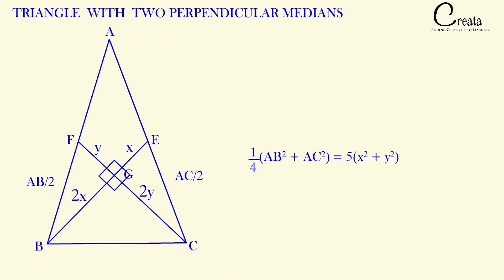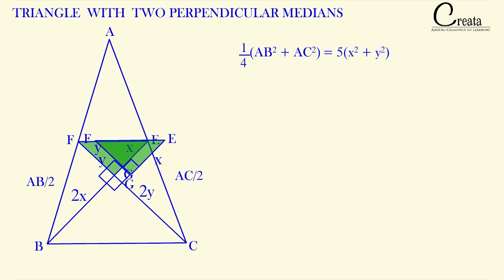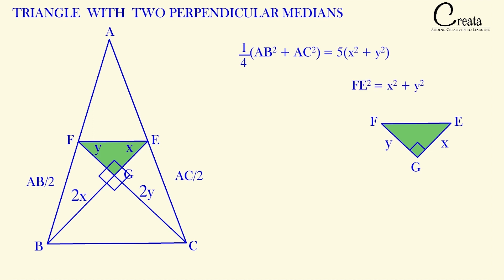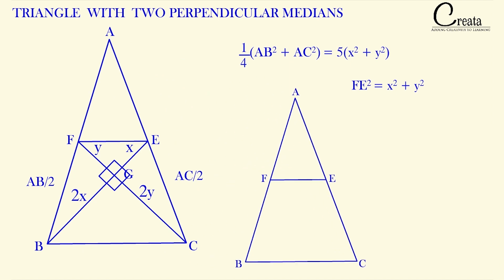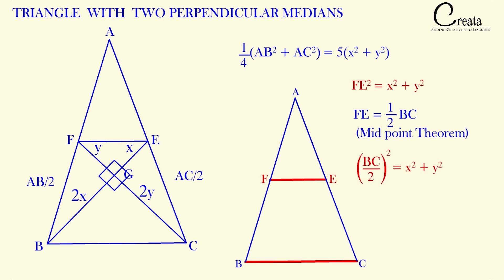Let's take triangle FGE. This is also a right-angled triangle with angle G as 90 degrees. Applying Pythagoras: FE² = X² + Y². Now in triangle ABC, F and E are midpoints, so by the midpoint theorem, FE is parallel to BC and equal to BC/2. Therefore BC²/4 = X² + Y².